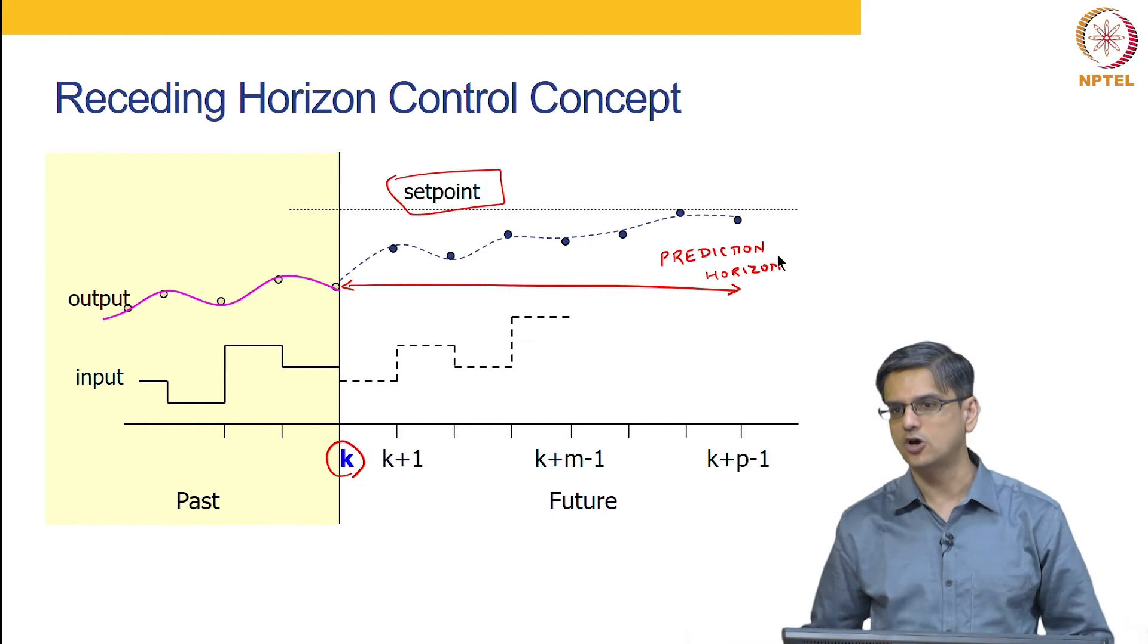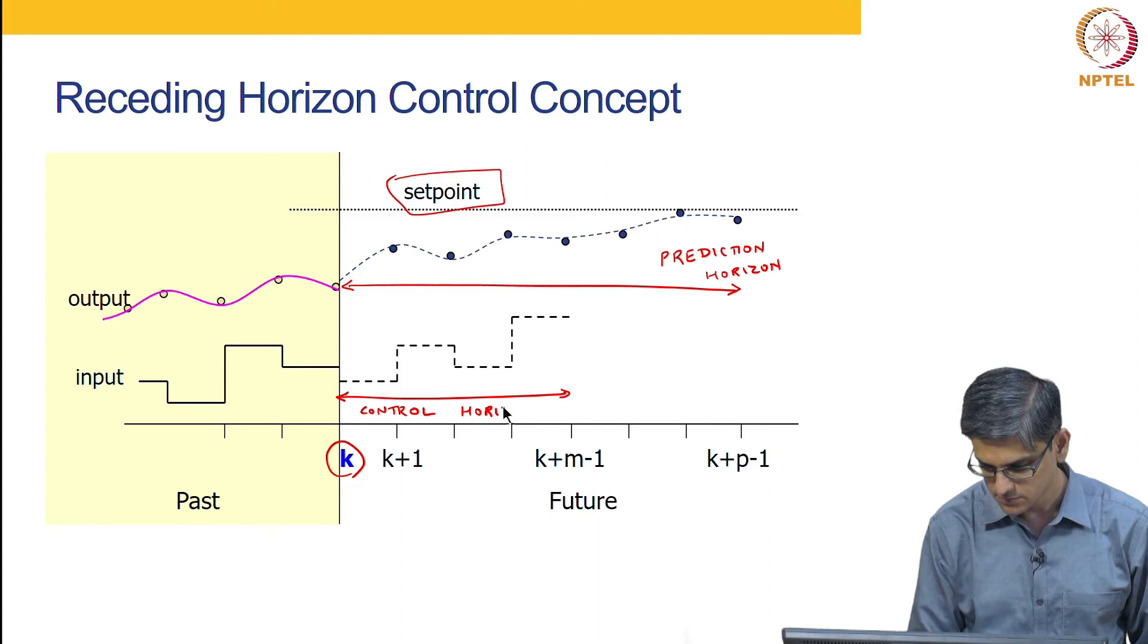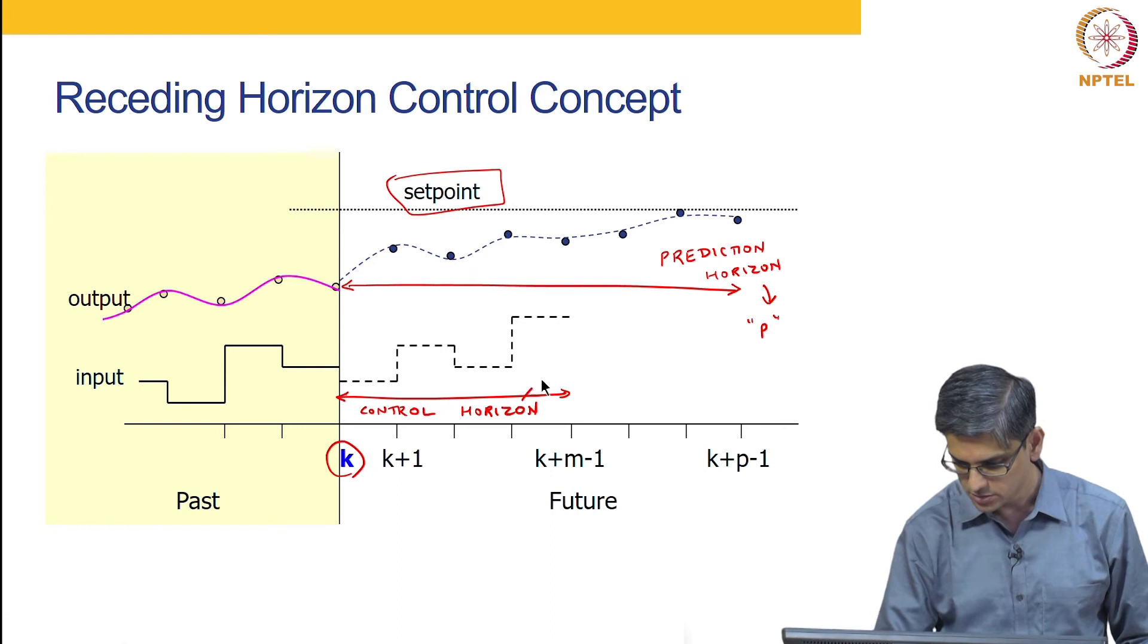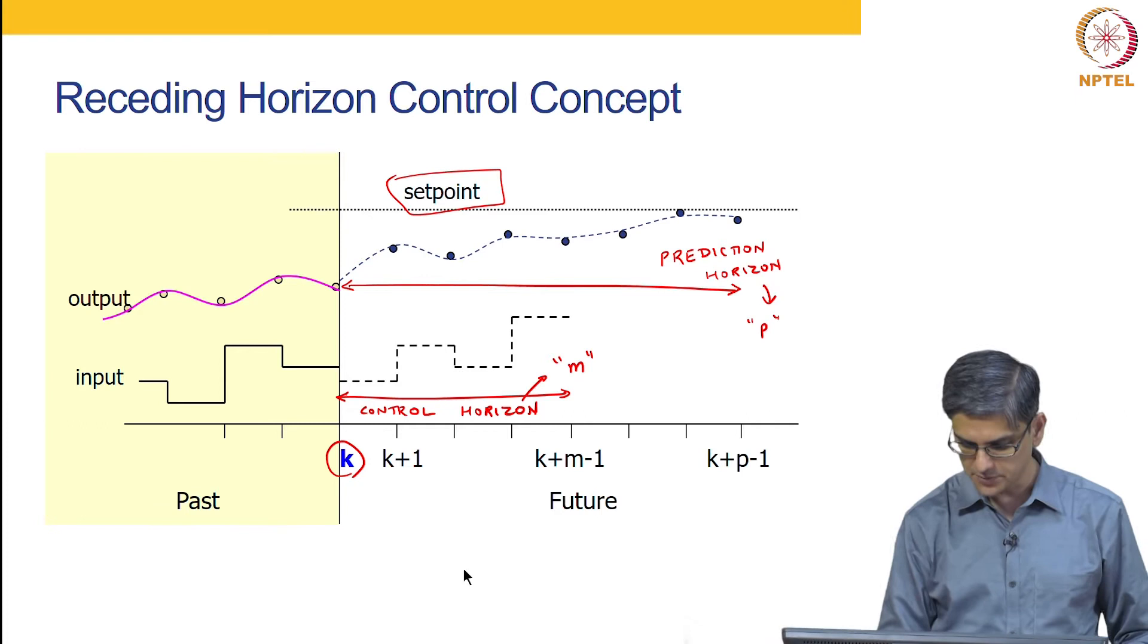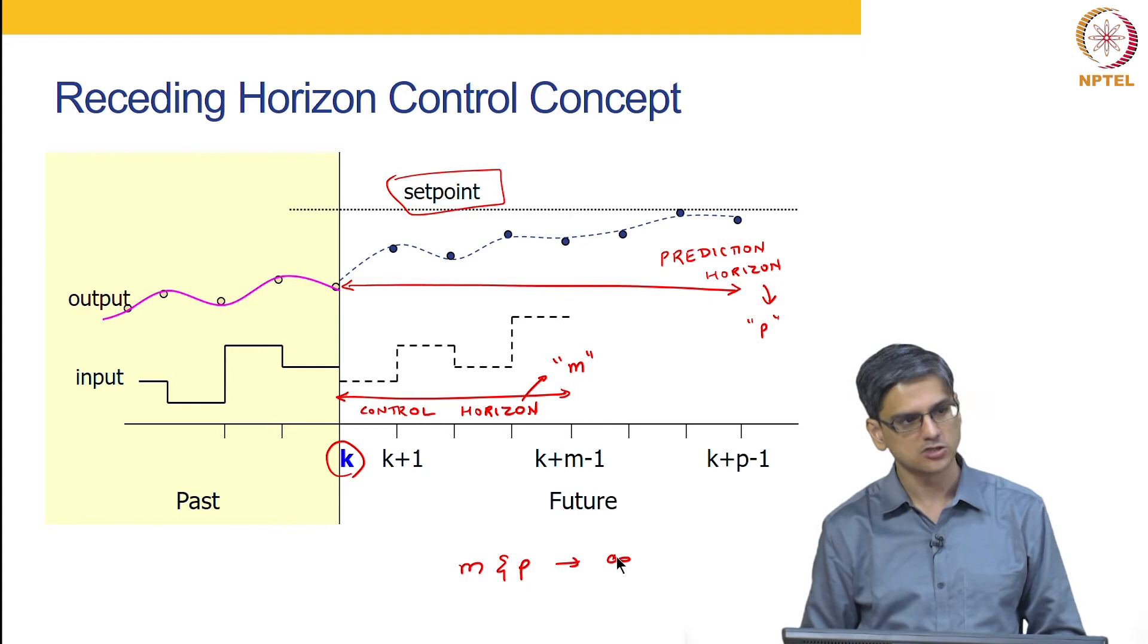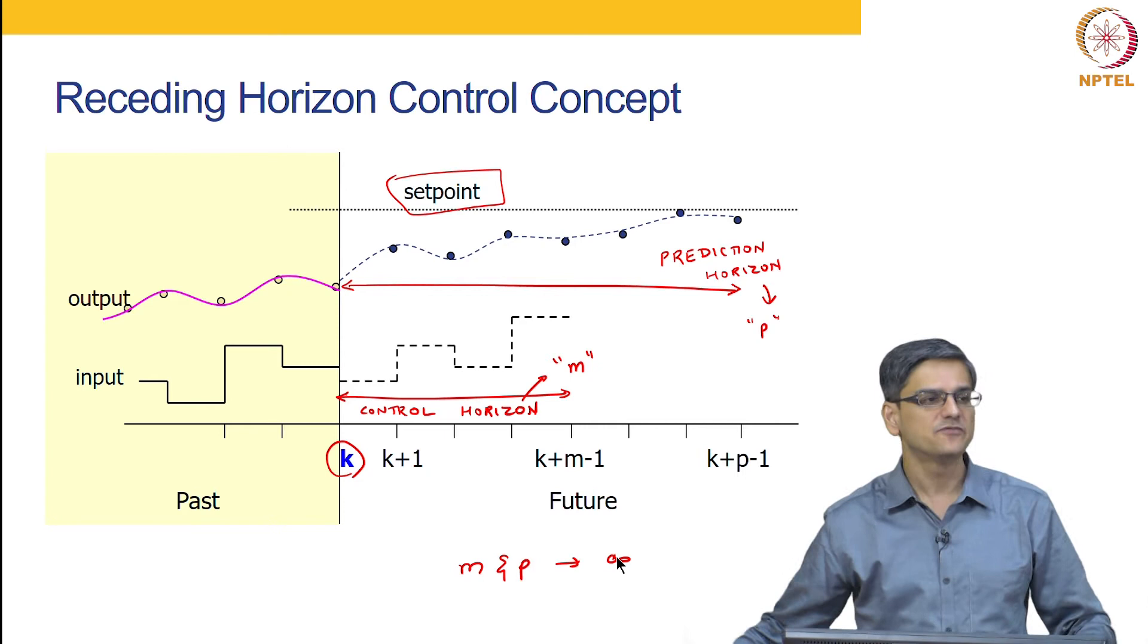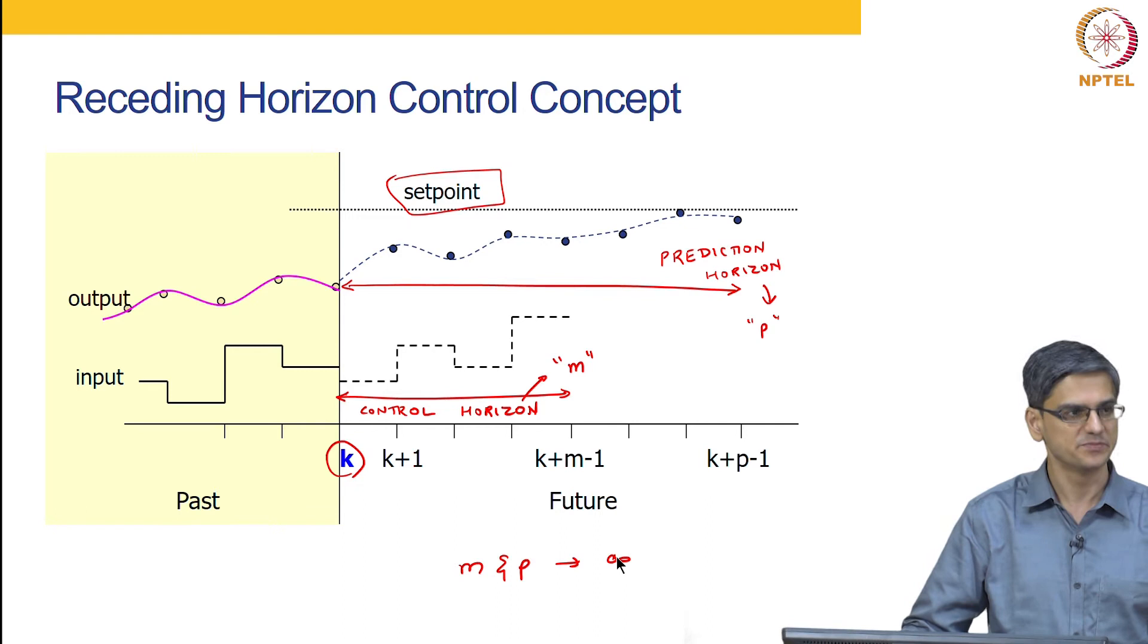We want the prediction horizon typically to be as long as possible. But we are trying to change the input moves for a shorter time duration in the future. And that is called control horizon. We will represent prediction horizon as P, we will represent control horizon as M. If we have infinite amount of computational resource, we would typically want M and P to be infinity. But we only have finite computational resources, so we have to be judicious about the choice of P. We want P to be as long as possible, but we want M to be reasonably long that does a balance between performance and the computational requirements. Both of them have to be finite.